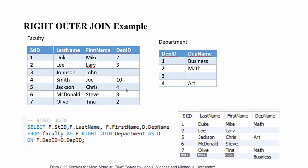It is very important that we specify what kind of join we are using, because the results of a right join and left join are very different when comparing the outputs.